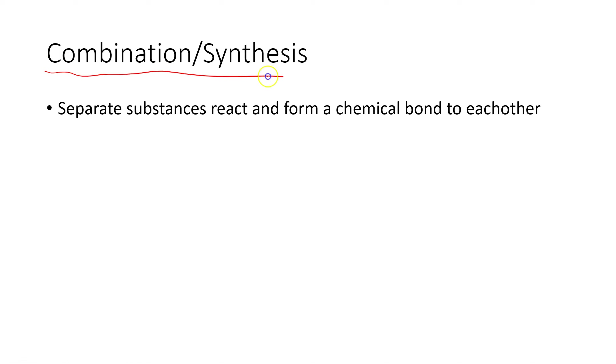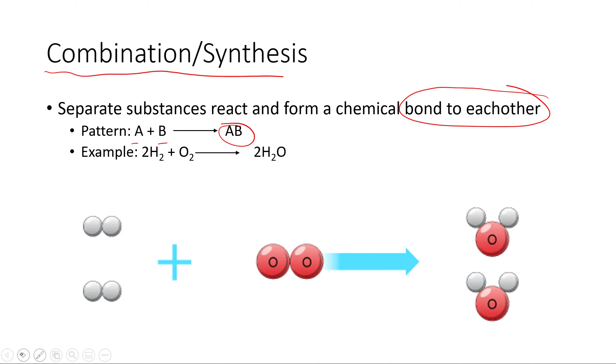With a combination or synthesis reaction, we begin with separate substances that basically combine or synthesize and bond to each other. And that could be a chemical or ionic or a covalent bond that forms. So the pattern we're looking at in this case is we have material A and material B, and those would be two different compounds or two separate elements. But in that reaction, they combine chemically to form a single product.